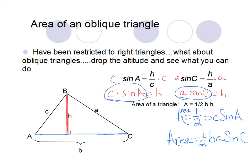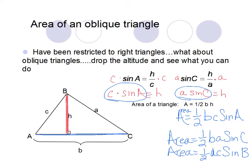I don't want you to memorize these formulas individually — notice the pattern. To find the area of a triangle, take one half, multiply two of the sides, then multiply by the sine of the other angle. If I used sides a and b, I use angle C. If I used sides c and b, I use angle A. There's actually a third formula too: one half times side a times side c times sine of B. All of those formulas work to find the area of an oblique triangle. Make sure your calculator is in degree mode today.